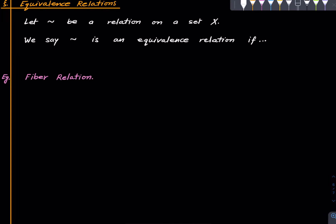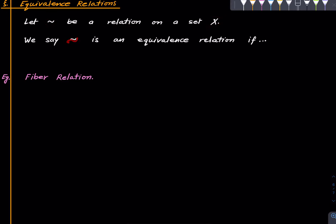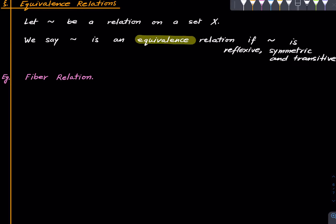Now for the most important class: equivalence relations. Suppose tilde is some relation on a set X. We say tilde is an equivalence relation if it is reflexive, symmetric, and transitive. As of now it may not be clear why they are so important, but it will become clear as you read more mathematics.